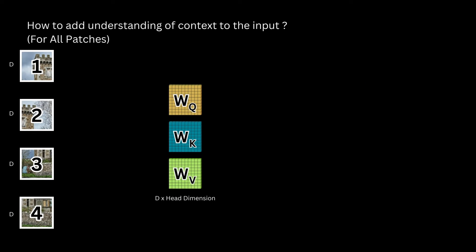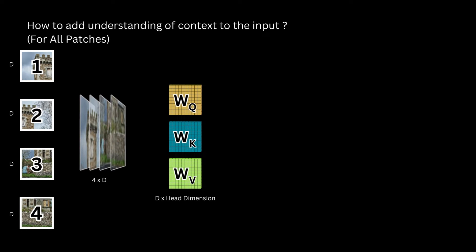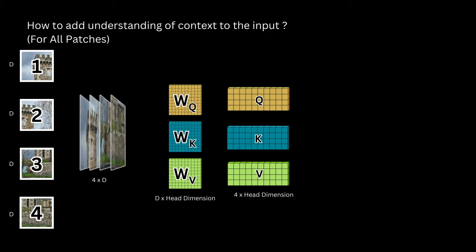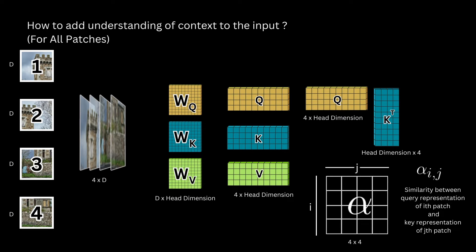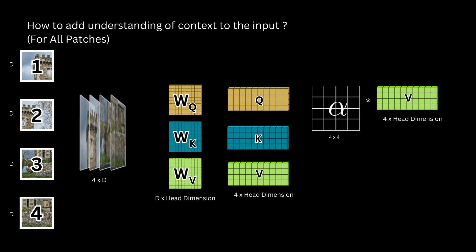We also need to do the same for all patches — for patch 2 being query, patch 3 being query, and patch 4 being query — and we can do all of that using matrix multiplication. Multiplying the matrix of patch representations with WQ, WK, and WV will give us the QKV vectors, each of shape four cross head dimension. The dot product then gives a four cross four matrix where each cell i, j indicates relevance between query patch i and key patch j. Multiplying this with V, which is also four cross head dimension, gives us a four cross head dimension matrix — the context representation for all four patches. This was all a single attention block.